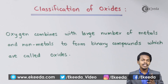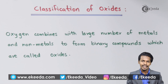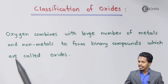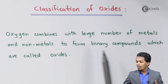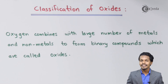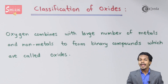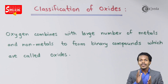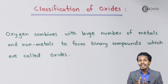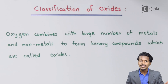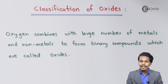Before understanding the classification of oxides, it is very much essential for us to understand what an oxide actually is. The definition says that oxygen combines with a large number of metals as well as non-metals so as to form binary compounds, which are called oxides. Binary compounds are those compounds which consist of at least two elements — oxygen along with a non-metal or a metal.